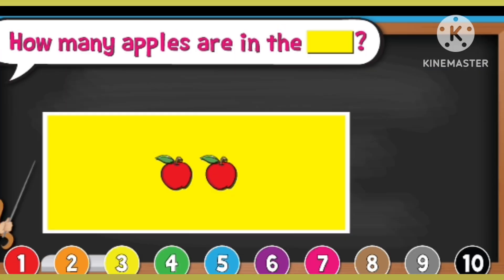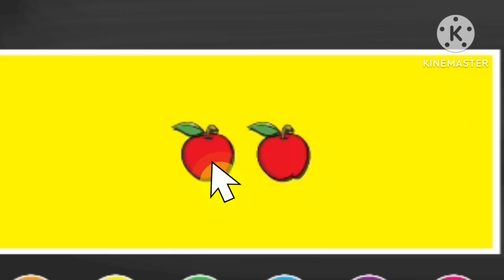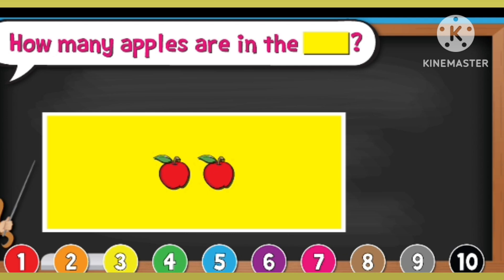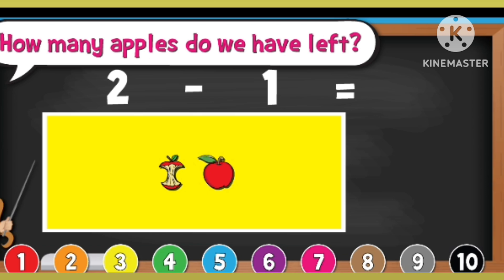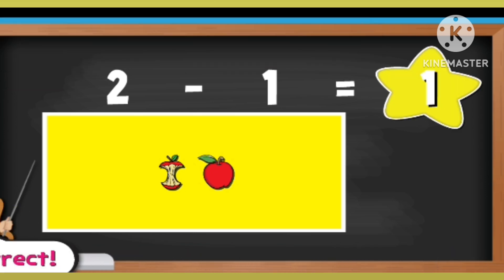How many apples are in the yellow rectangle? 1, 2. There are 2 apples. How many apples did we eat? 1. How many apples do we have left? 2 minus 1 equal to 1.